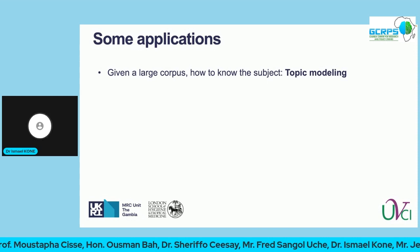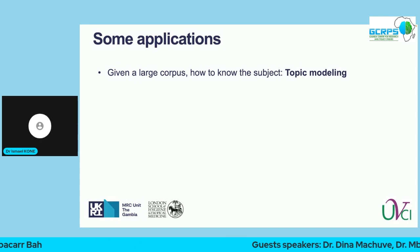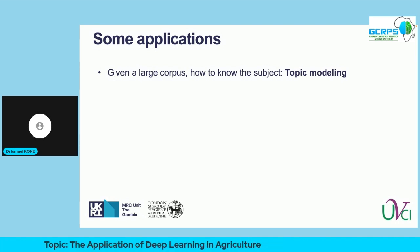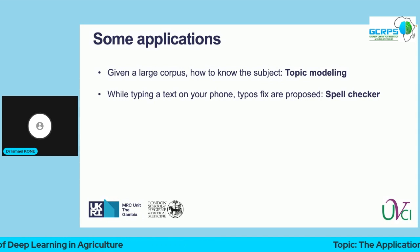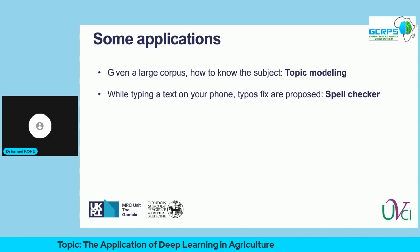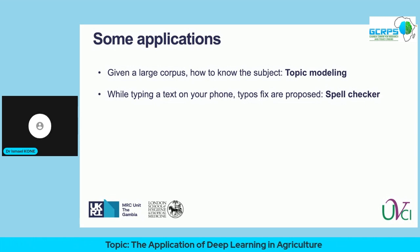One first example of NLP is topic modeling — the idea of getting the main subject of a large corpus of text. As humans, we want to get information rapidly without reading pages and pages; topic modeling helps us understand the text quickly. We also have spell checkers on our cell phones: when you type some text and make a typo, you see a suggestion, and behind the scene there is machine learning running to give you the best spelling.